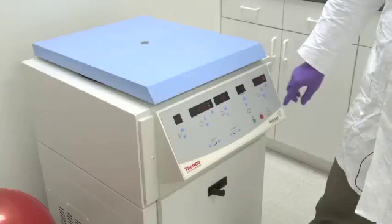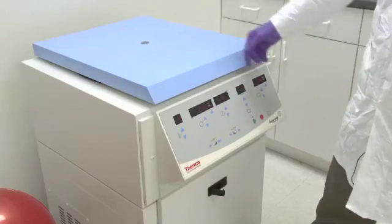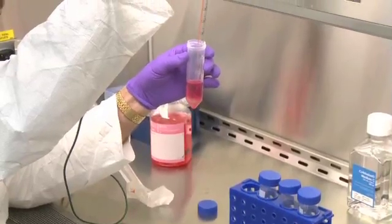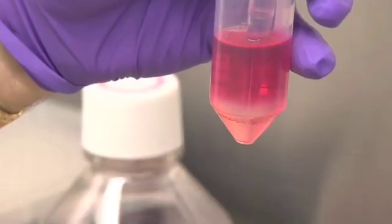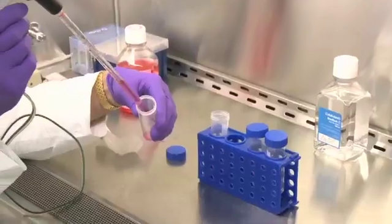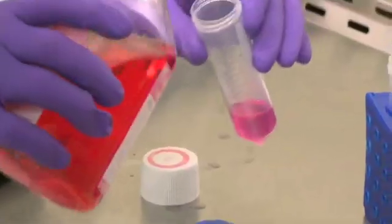Set the centrifuge to 200 g at room temperature for 30 minutes. After cells have been centrifuged, using a sterile transfer pipette, insert the tip until it touches the buffy coat layer containing the B cells. Transfer the cells to a new conical tube.